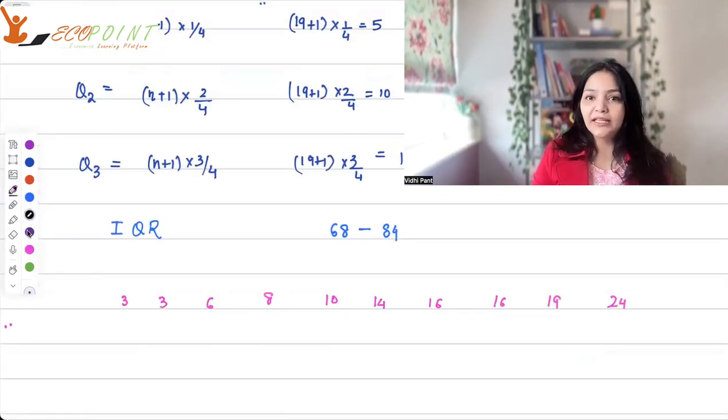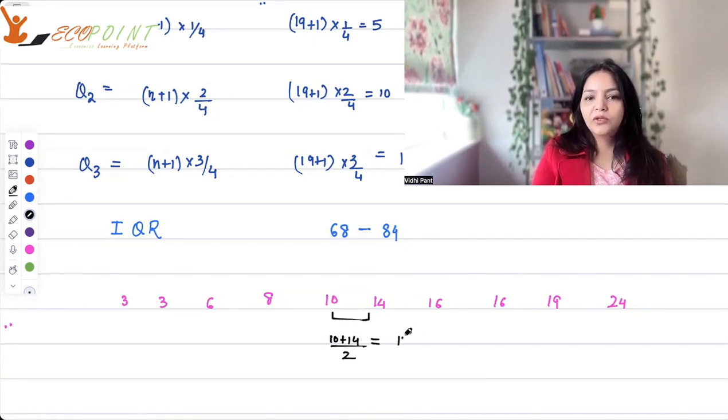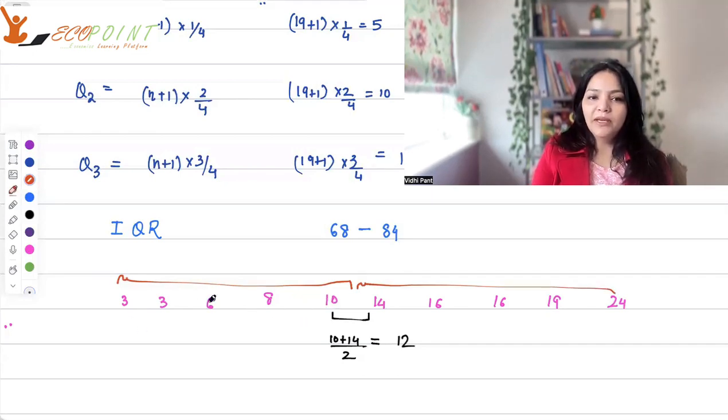Now, some of you definitely must be thinking, what if the data set is even number of points? So, if your data is even number of points, how do you calculate your median? If I have to calculate median for this data, which I have already put up in ascending order, what will the median be? Median will be the average of 10 and 14. So, median is 12. So, the median value of the first half will be your first quartile or the lower quartile. The median value of the second half will be the second quartile.